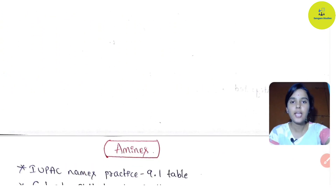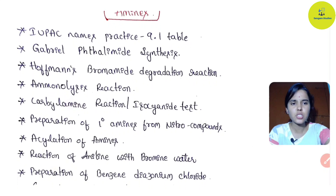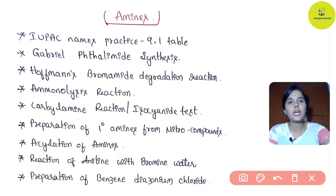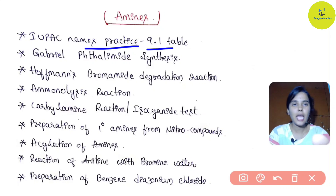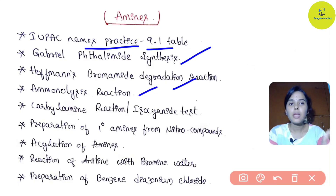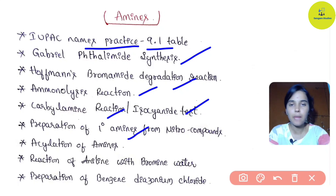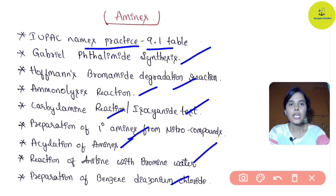Next chapter: Amines. Important topics for the second test. First, practice IUPAC names from the NCERT textbook - the rationalized NCERT textbook, Table 9.1 gives IUPAC names for amines. Named reactions are definitely asked in the second test: Gabriel phthalimide synthesis is very very important, Hoffmann bromamide degradation reaction must also be studied. Carbylamine reaction, reaction with isocyanate test, preparation of primary amines from nitro compounds, acylation of amines, reaction of aniline with bromine water, and preparation of benzene diazonium fluoride - all these reactions are very important for the second test.